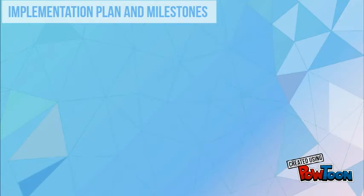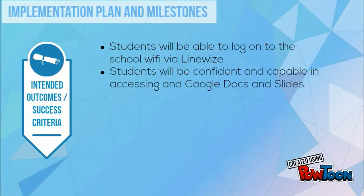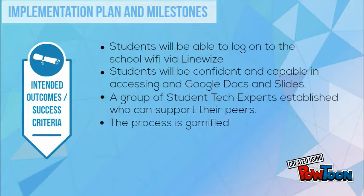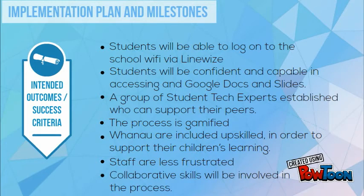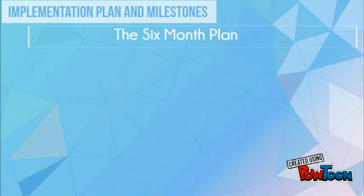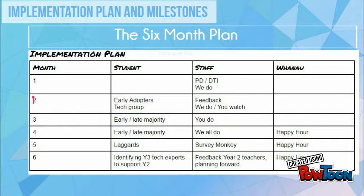Implementation plan and milestones. We have identified these basic skills as the success criteria for our program, which will be the core focus of our teaching and learning. These outcomes are the result of the conversations we have had with staff about their frustrations with using digital tools. Our 6-month plan identifies how and when we will target our stakeholders and the subgroups that will diffuse our innovation most effectively. It helps us identify how and when we will be incorporating leadership theories and developing 21st century skills throughout the process.